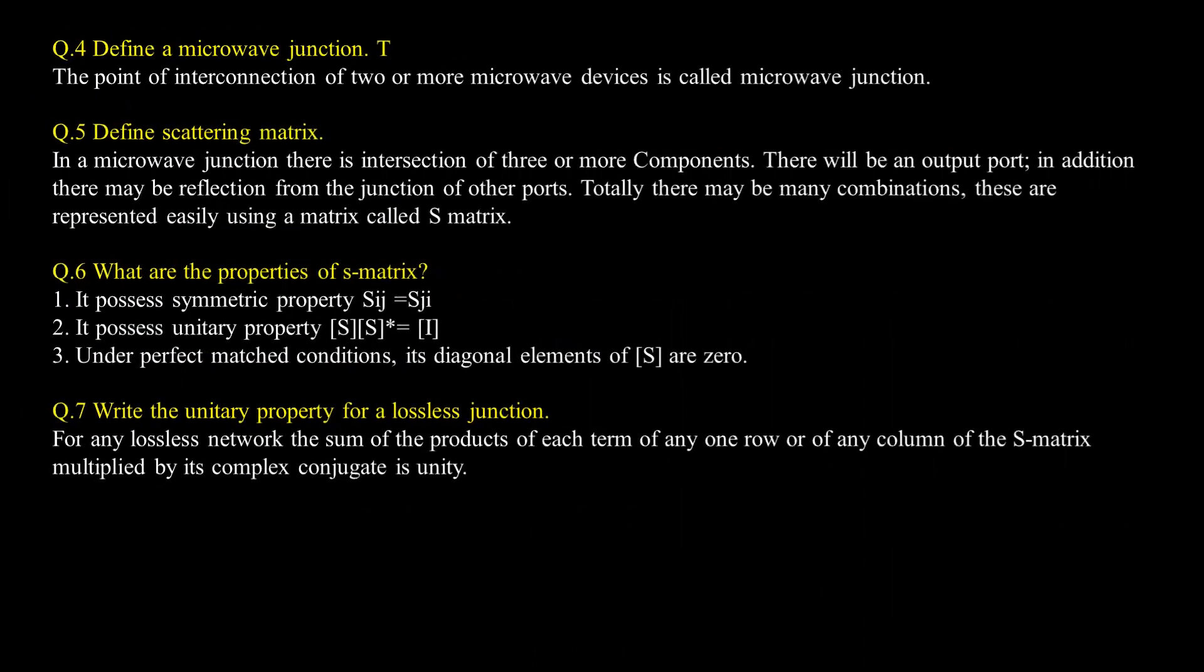Now, define a microwave junction T. The T junction is the point of interconnection of two or more microwave devices, called microwave junction. Define scattering matrix. In a microwave junction, there is interaction of three or more components. There will be output waves. In addition, there may be reflections from the junction or other sources. Totally, there may be many combinations. These are represented easily using a matrix called S-matrix.